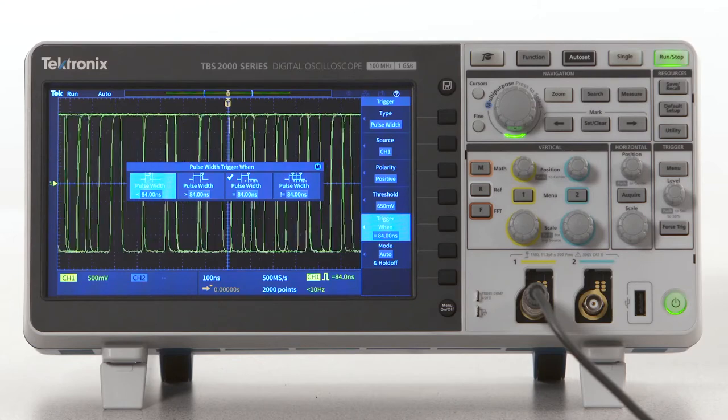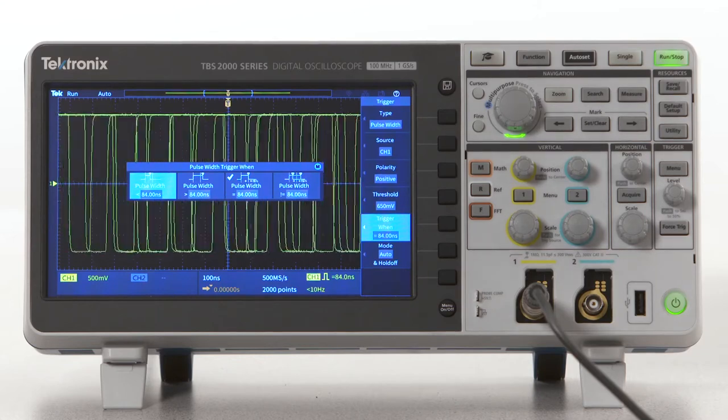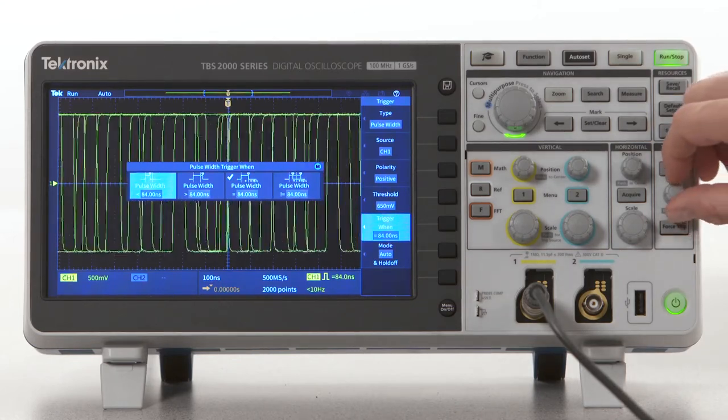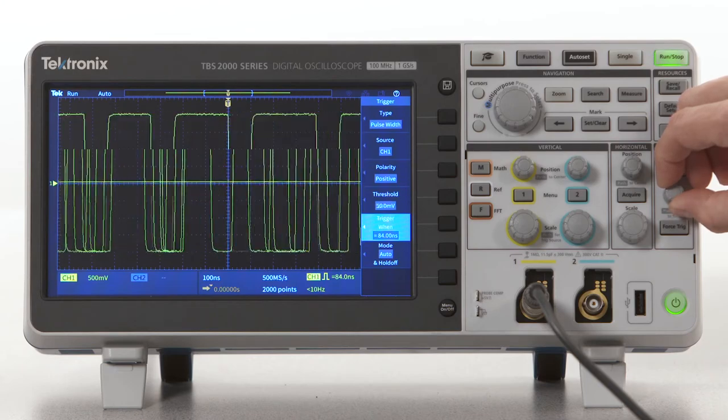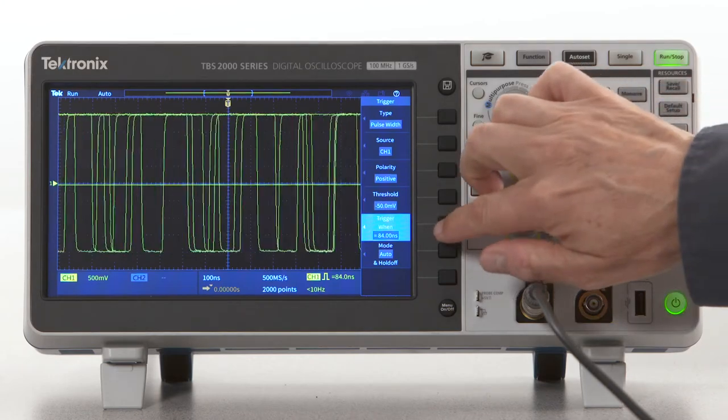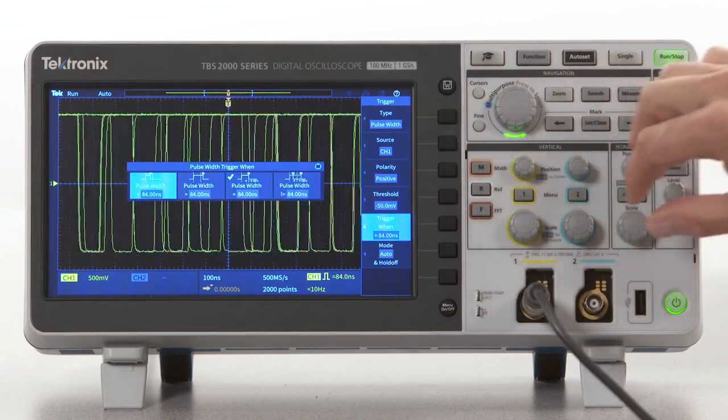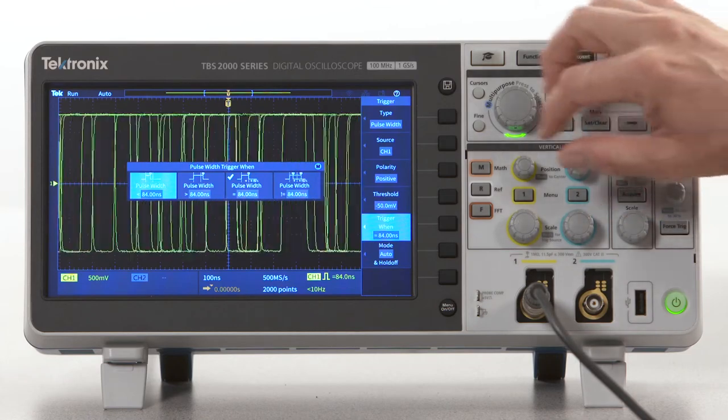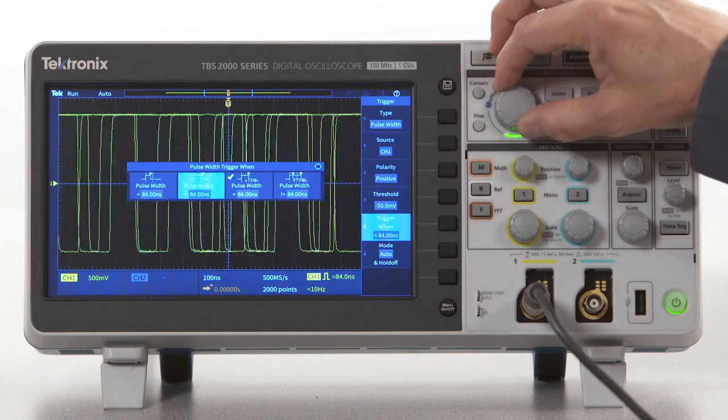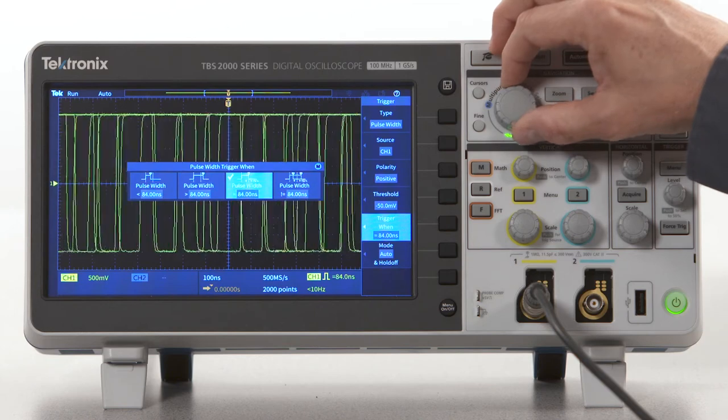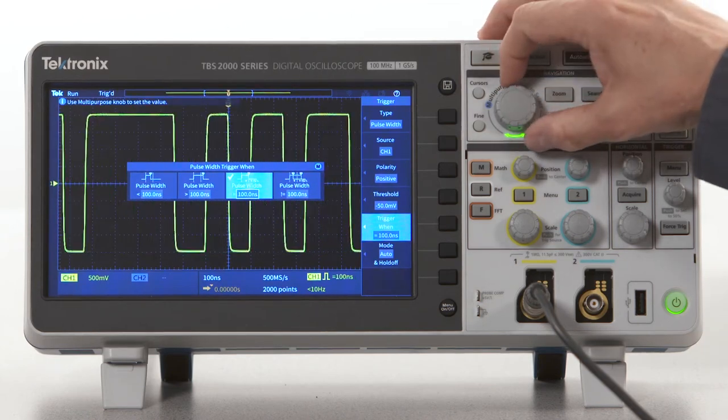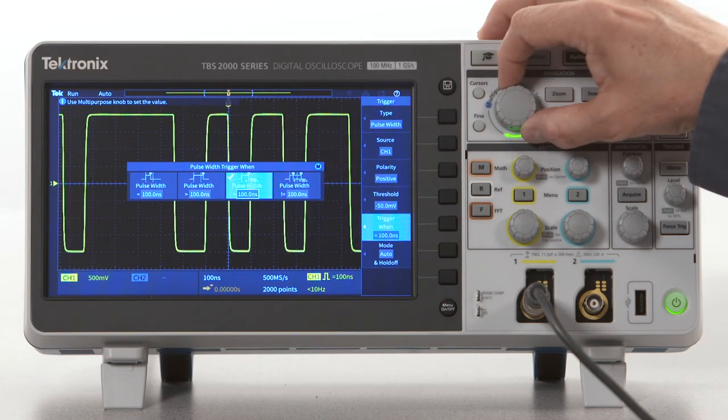To use pulse width triggering, you specify the kind of pulse you're looking for. It uses a single level to define the difference between high and low, so I'll set that about midway. Now let's look for a positive pulse that equals 100 nanoseconds long. Got it.